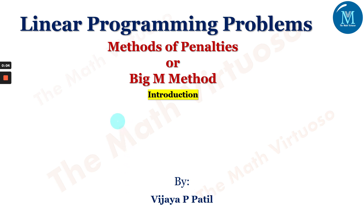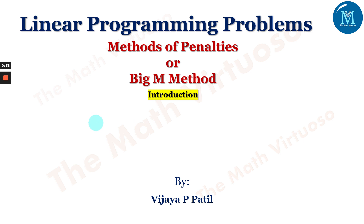Hello and namaste. In continuation with the linear programming problems, we have done in detail about everything about the simplex method — maximization type, minimization type, their flow charts. Going ahead with that, suppose we have a scenario where we have to include a surplus variable in the basis. At that time we introduce another variable called an artificial variable. Whenever we have to deal with the artificial variable, the Big M method or the method of penalties comes into existence.